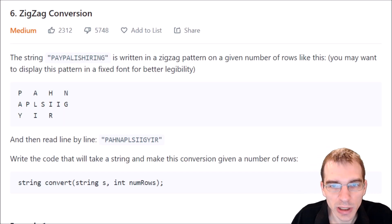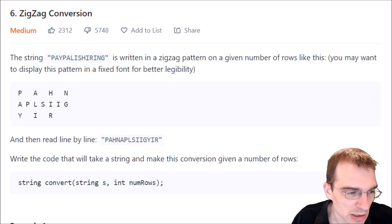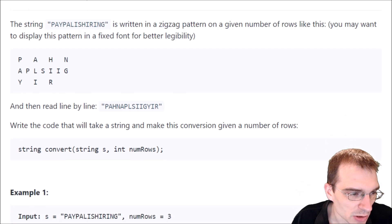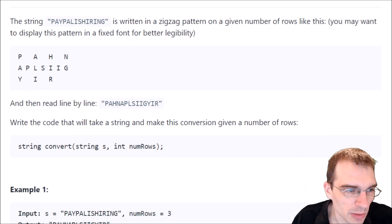Hello, and welcome to Python programming practice. In this episode, we are going to be covering LeetCode number six called zigzag conversion. This is classified as a medium problem, so it might take some doing to get through it.